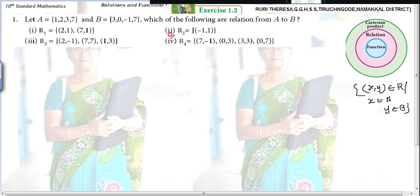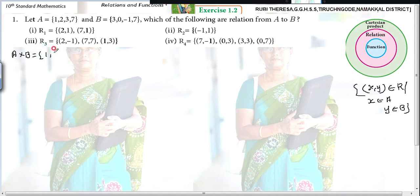Here, 7 is an element of A, but 0 is not an element of A. Even though one pair does not belong to A cross B, the relation does not exist — it is not a relation from A to B. Now let us do the problem formally. A cross B: what is A? 1, 2, 3, 7. What is B? 3, 0, minus 1, 7.